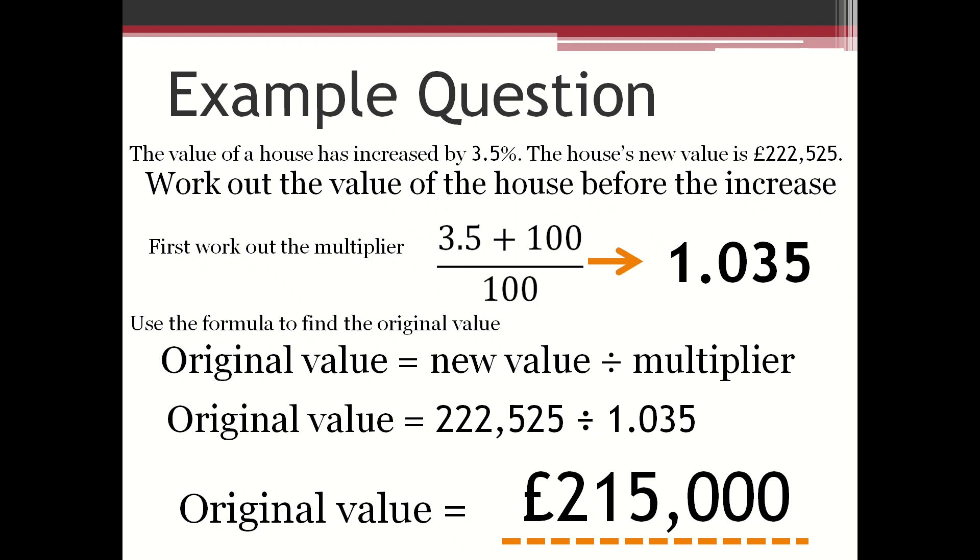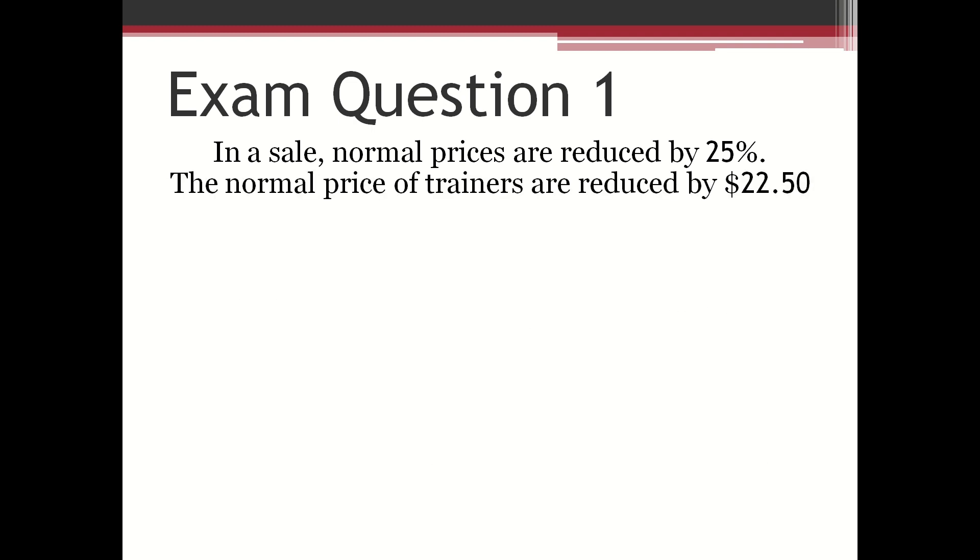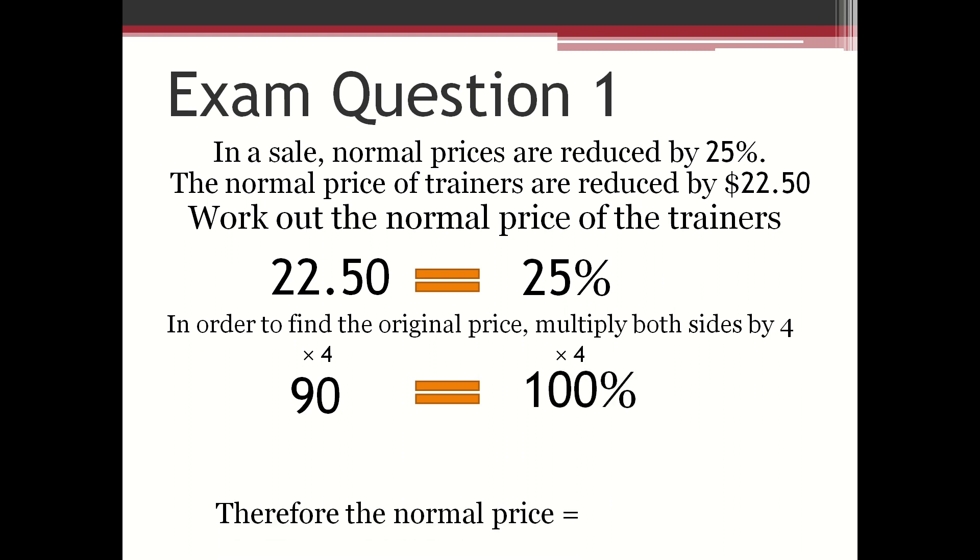Now we're going to look at the first exam question. In a sale, normal prices are reduced by 25%. The normal price of trainers are reduced by $22.50. Work out the normal price of the trainers. Here you can put the reduction equal to the percentage that is being reduced by, so $22.50 equals 25%. In order to get 100%, multiply both sides by 4, so $90 equals 100%. Therefore, the normal price of the trainers is $90.